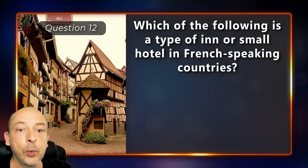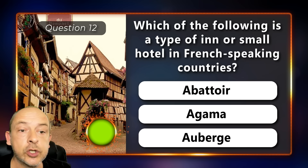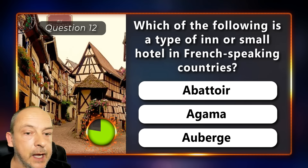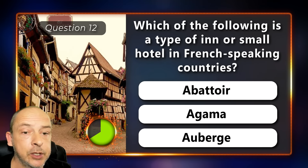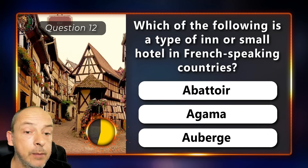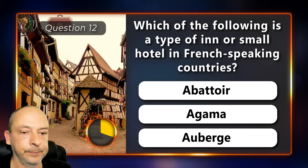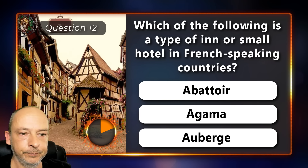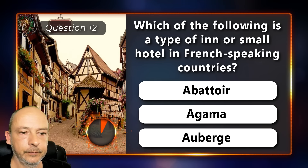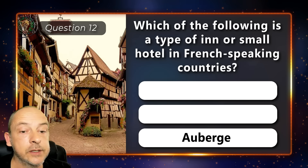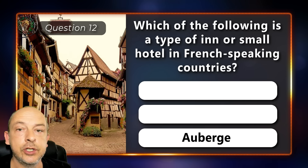Which of the following is a type of inn or small hotel in French-speaking countries: an abattoir, an agama, or an auberge? The answer is auberge.